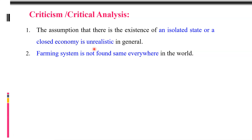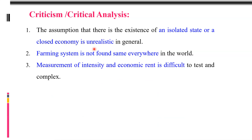Second criticism: farming systems are not the same everywhere in the world. Third: measurement of intensity and economic rent is difficult and complicated, because transportation cost, market cost, and production cost do not remain the same everywhere — they change with time and place. This is a major criticism made by various scholars.